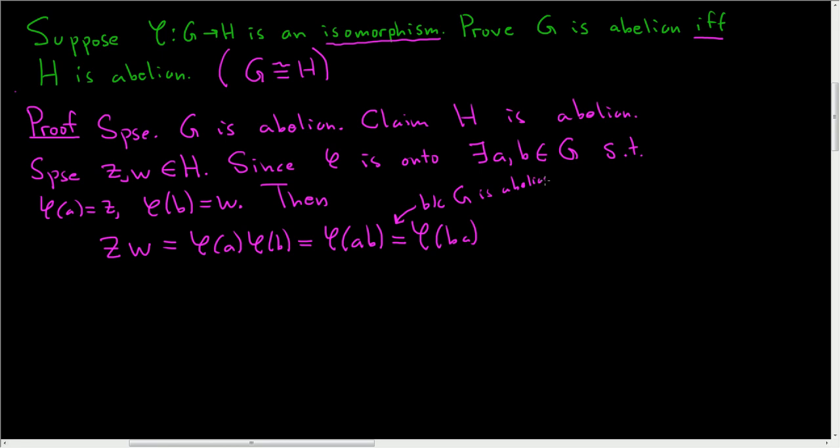That's one of the key steps, but again phi is a group homomorphism so this is phi of B times phi of A, but phi of B is W and phi of A is Z. So sure enough Z times W is equal to W times Z, so we showed that H is abelian.